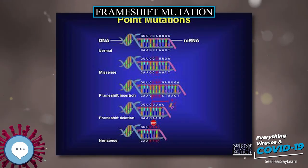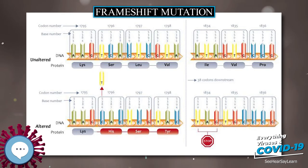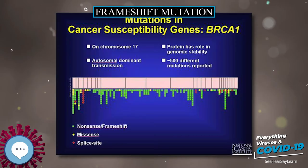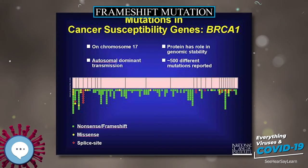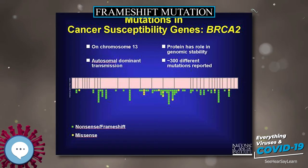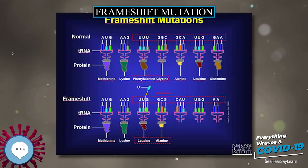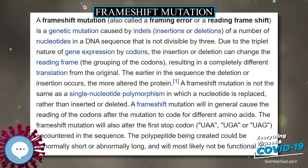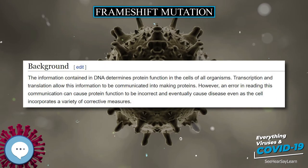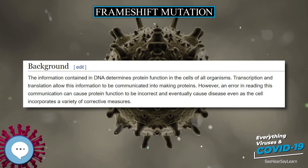The information contained in DNA determines protein function in the cells of all organisms. Transcription and translation allow this information to be communicated into making proteins. However, an error in reading this communication can cause protein function to be incorrect and eventually cause disease, even as the cell incorporates a variety of corrective measures. In 1956, Francis Crick described a flow of genetic information from DNA to a specific amino acid arrangement for making a protein as the central dogma.